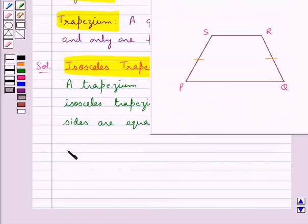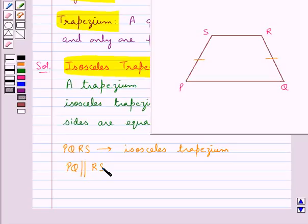Consider this trapezium PQRS. It is an isosceles trapezium in which we have PQ parallel to RS, and the non-parallel sides PS and RQ are equal. That is, PS equals RQ.